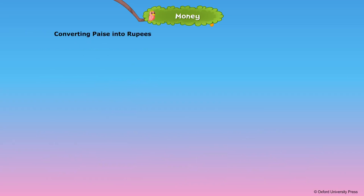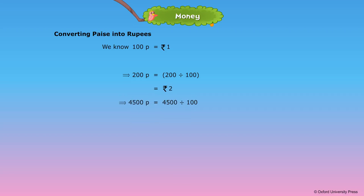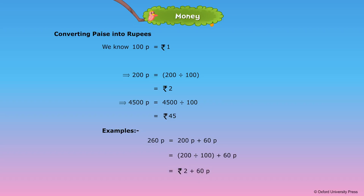Converting paise into rupees. Now we learn how to convert paise into rupees. We know 100 paise is equal to rupee 1. 200 paise divided by 100 equals rupees 2. 4,500 paise divided by 100 equals rupees 45. Examples: 260 paise is equal to 200 paise plus 60 paise, that's equal to 200 divided by 100 plus 60 paise, that's equal to rupees 2 plus 60 paise, that's equal to rupees 2.60.